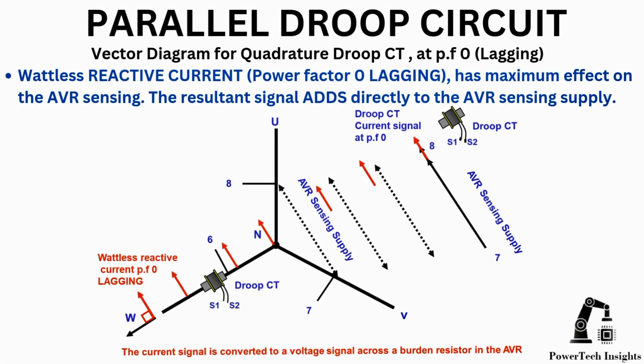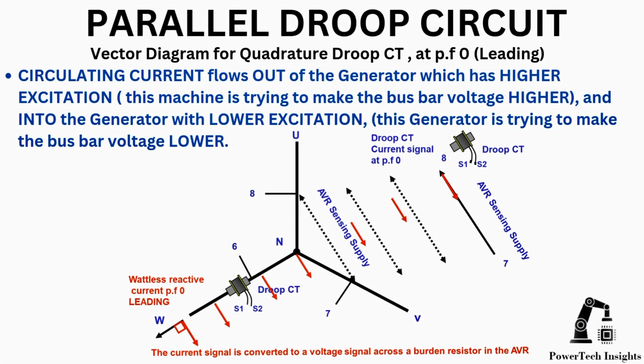This is the vector diagram for quadrature droop CT at power factor 0, lagging. Reactive current at power factor 0 lagging has maximum effect on the AVR sensing. The resultant signal adds directly to the AVR sensing supply. This is the vector diagram for quadrature droop CT at power factor 0, leading. Circulating current flows out of the generator with higher excitation — this machine is trying to make the bus bar voltage higher — and into the generator with lower excitation, which is trying to make the bus bar voltage lower.